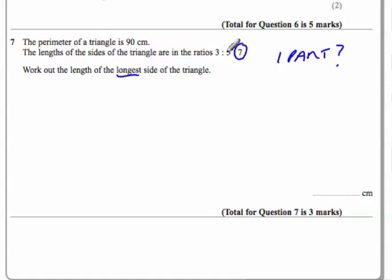One part. We've got 3 parts, 5 parts and 7 parts. That makes up a total of 15 parts. And that 15 parts equals altogether 90 centimeters. Remember, this is perimeter, so we're talking about them all added up together, all the lengths added up together.